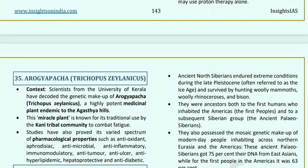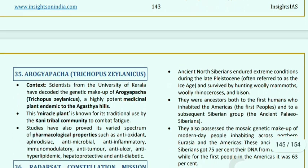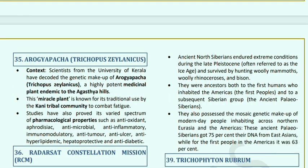Arogyapacha (Trichopus zeylanicus): the University of Kerala found this medicinal plant endemic to Agasthya Hills. It is known as a 'miracle plant' and has been used traditionally by the Kani tribal community to relieve fatigue. Studies have proved its varied spectrum of pharmacological properties including anti-oxidant, aphrodisiac, and antimicrobial properties.